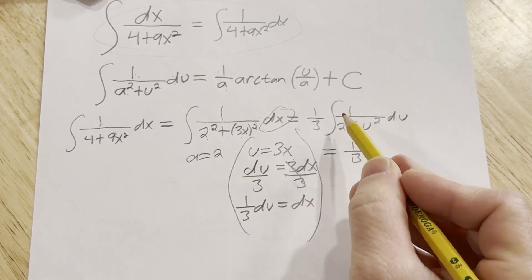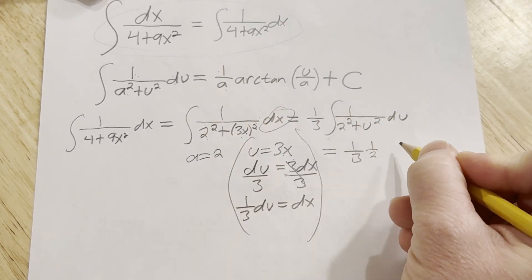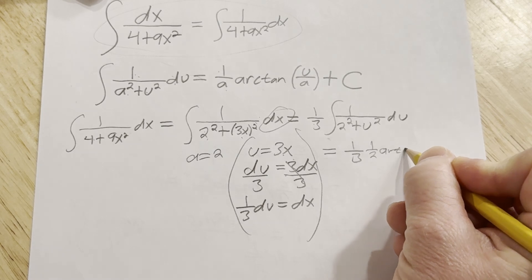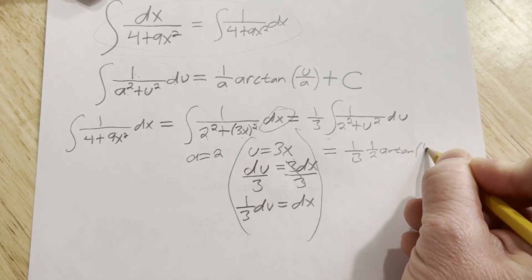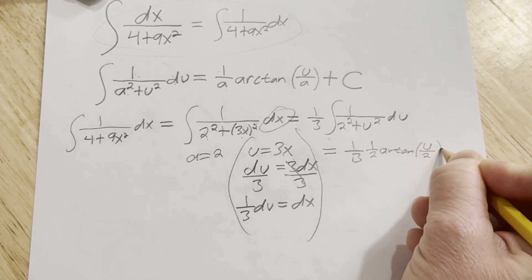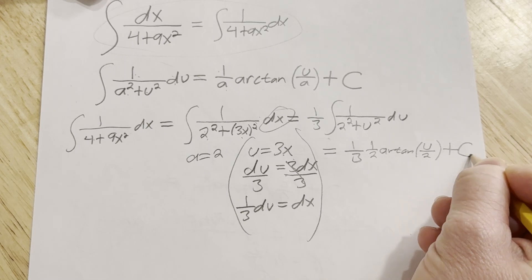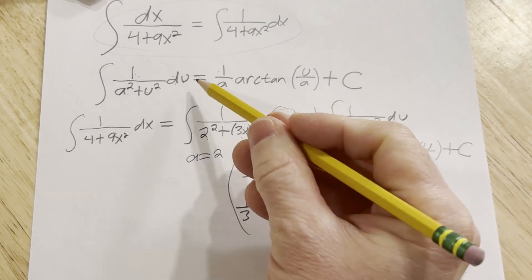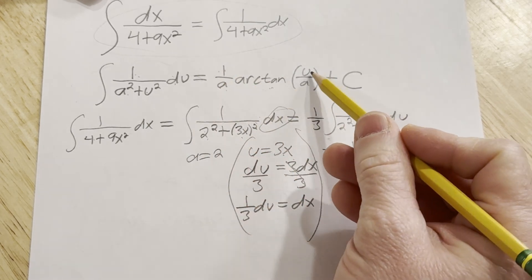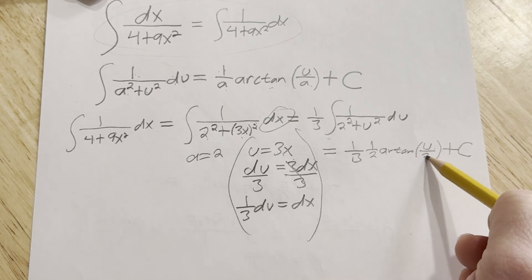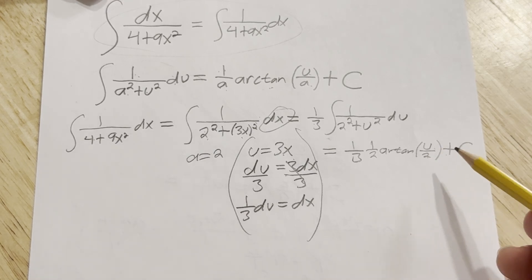So a is 2 arc tan of u over a. So u over 2 plus our arbitrary constant of integration. So again, it's 1 over a arc tangent u over a, u over 2 plus our arbitrary constant of integration.